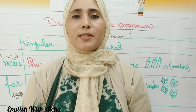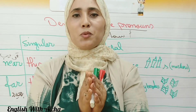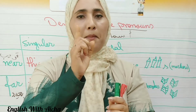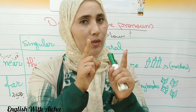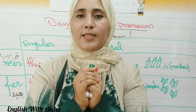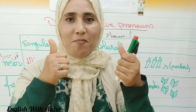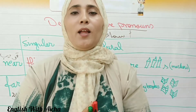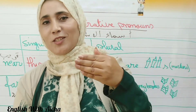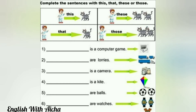It's a very simple lesson but we'll do a quick short practice to see if you understand well. In this practice, you have to complete the sentences with 'this,' 'that,' 'these,' or 'those.' Let's start.